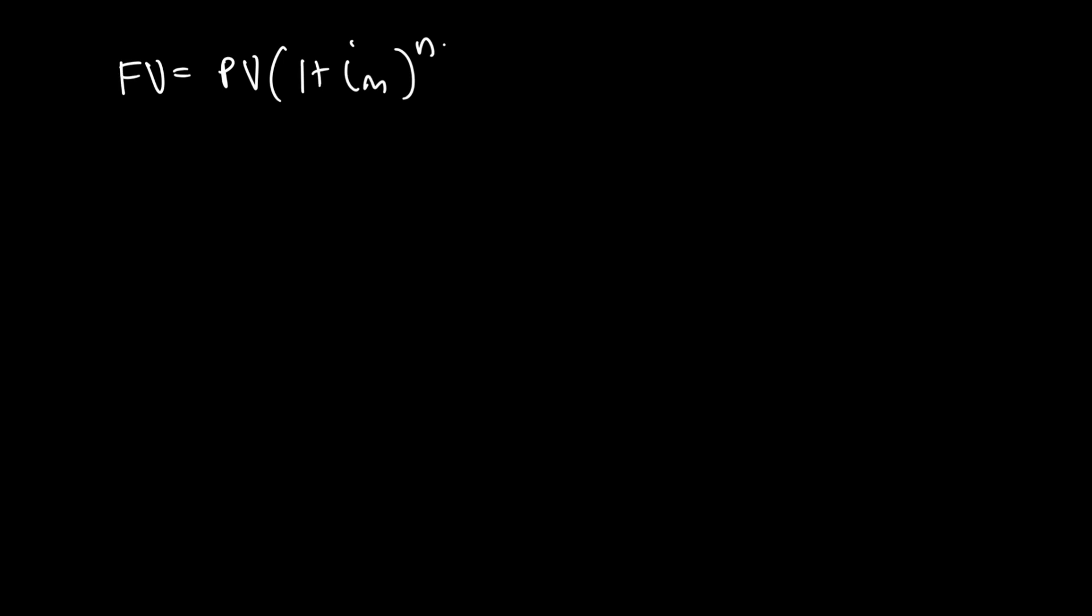What we're going to do now is make n the subject of the formula. So we want n equals. First, we're going to take away everything that's relatively easy to take away. This entire term involves n, this one doesn't, but it's multiplied with it, so we can divide through by PV. We get FV/PV equals (1 plus i_m) to the power of n.